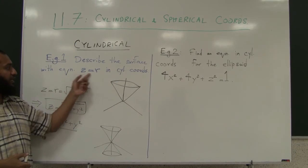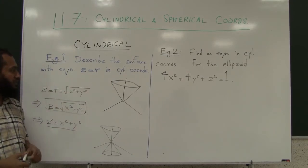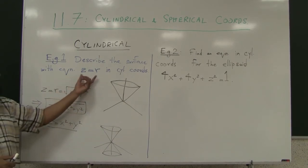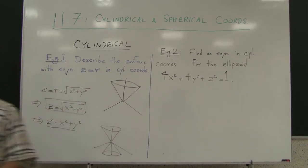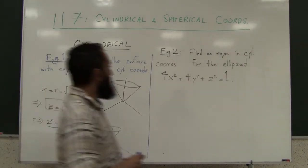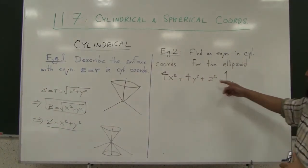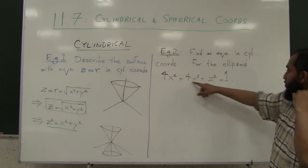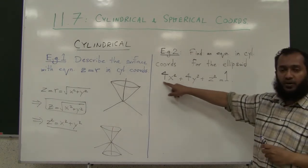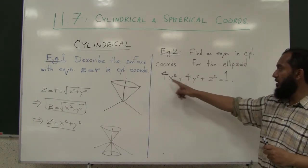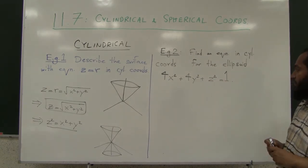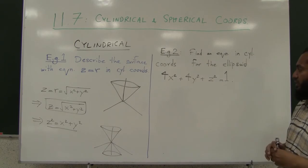That was an example going from cylindrical equation to rectangular equation. Let's do another example where we go from rectangular equation to cylindrical coordinates equation. This is the ellipsoid - refer back to 11.6, all the coefficients are positive, which gives you the ellipsoid.